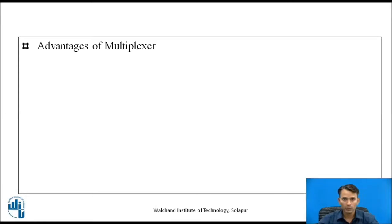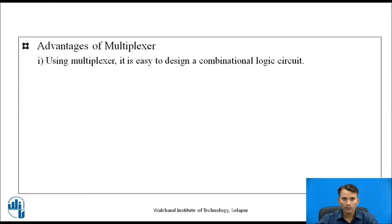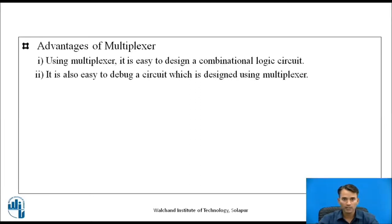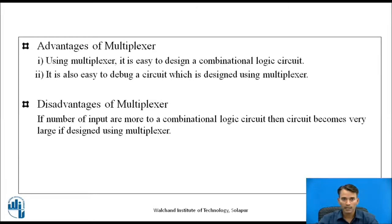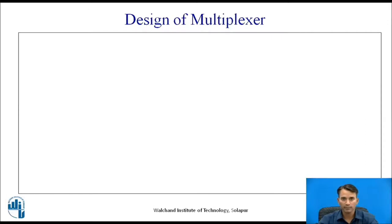Now let us see the advantages of multiplexer. Using a multiplexer, it is easy to design a combinational logic circuit, because sometimes it is required to minimize the equation using K-map or other techniques. But when designing using a multiplexer, there is no need to minimize the logical equation. It is also easy to debug a circuit designed using a multiplexer. The disadvantage is that if the number of inputs is more, the circuit becomes very large.